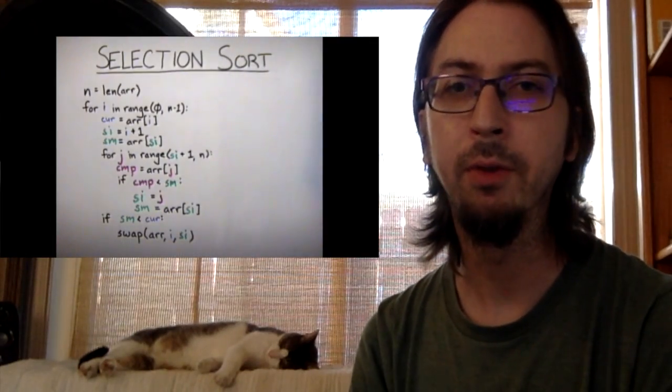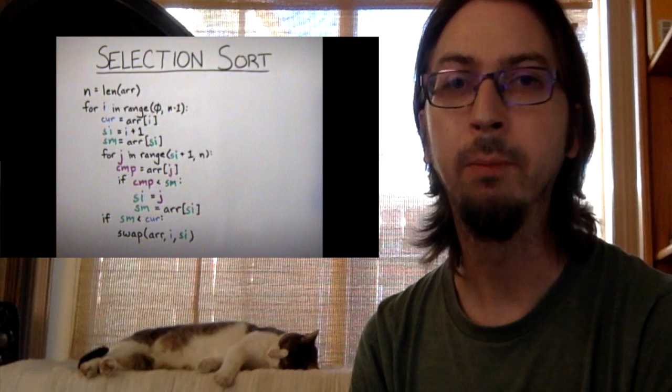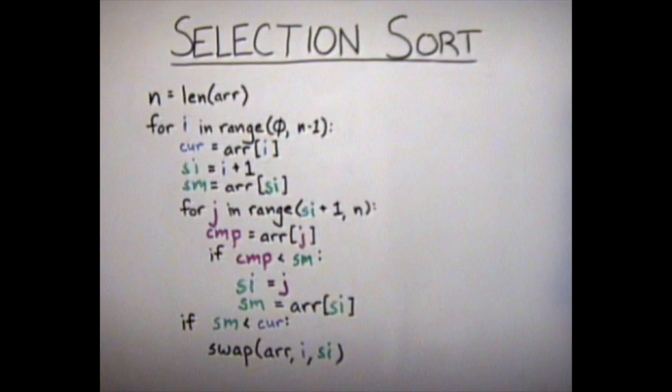Now take a look at how this algorithm could be implemented in Python. You see the outer loop and the inner loop, and you see six variables in all.